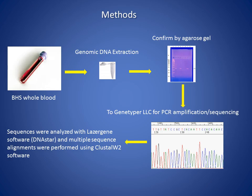Our methods were straightforward. We took whole blood samples, performed genomic DNA extraction using standard kits, ran them through an agarose gel to confirm sufficient genetic material for sequencing, then sent them to Gene Typer for PCR amplification and sequencing. We employed Laser Gene software and Cluster W2 software to do alignments and compare gene sequences between individuals, populations, and subspecies, and compared sequences from related species available in GenBank.